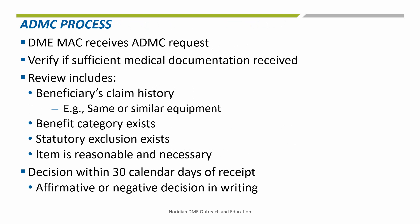Once a request is received, the DME MAC will determine if there is sufficient medical documentation that supports whether the item is reasonable and necessary. In addition, a review of the beneficiary's claims history will be conducted to determine whether any other reason exists to cause the claim to be denied, for instance whether same or similar equipment has already been provided. The DME MAC will also review the information to determine if a benefit category exists and if a statutory exclusion exists.